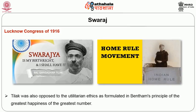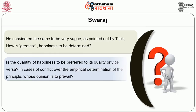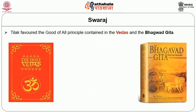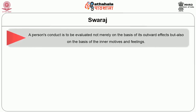Tilak was also opposed to utilitarian ethics as found in Bentham's principle of the greatest happiness of the greatest number, which he considered very vague. He questioned: how is greatest happiness to be determined? Is it the quantity or quality of happiness to be preferred? In cases of conflict over empirical determination of the principle, whose opinion is to prevail? In the place of the utilitarian formula, Tilak favoured the good of all principle contained in the Vedas and Bhagavad Gita. He assigned a special role to spiritual leaders or yogis, and held that inner happiness was superior to external happiness. A person's conduct is not to be merely evaluated on the basis of its outward effects but also on the basis of inner motives and feelings.